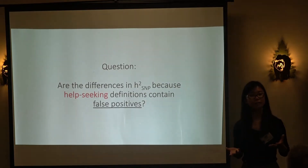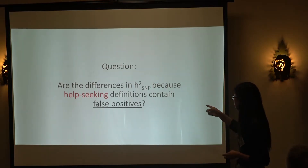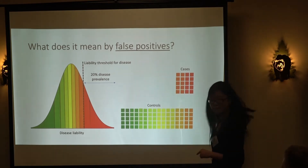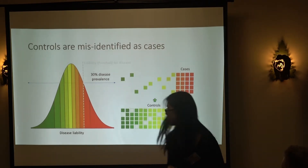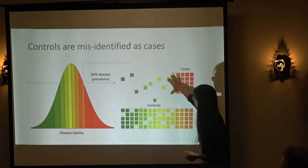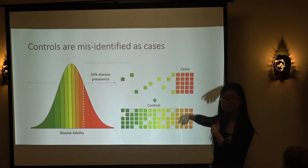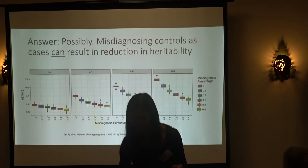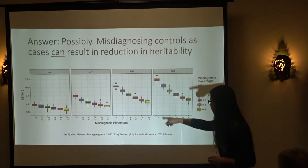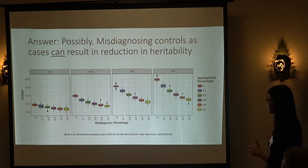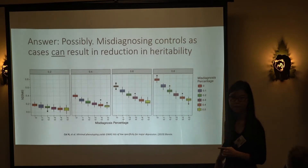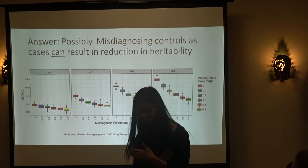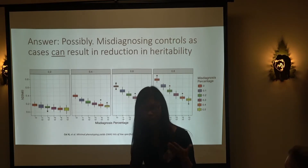Could the heritability deflation be because the samples contain false positives — not milder cases, but random controls misclassified as cases? We ran the same simulation, this time spiking in 10%, 20%, 30% of random false positives into the case group. You do see a deflation in heritability. So false positives are a potential reason why we see heritability deflation in these minimal phenotyping definitions.